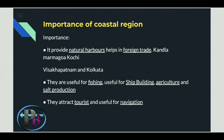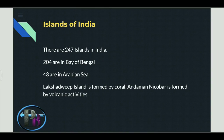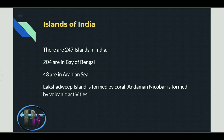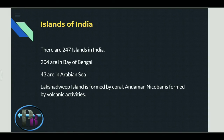The last physical feature is the islands of India. There are 247 islands in total — 204 are in the Bay of Bengal and 43 are in the Arabian Sea. The most important are the Lakshadweep Islands, located in the Arabian Sea and formed by coral, and the Andaman and Nicobar Islands, formed by volcanic activities.